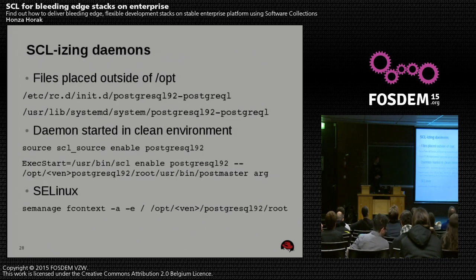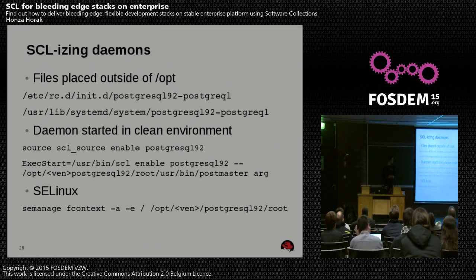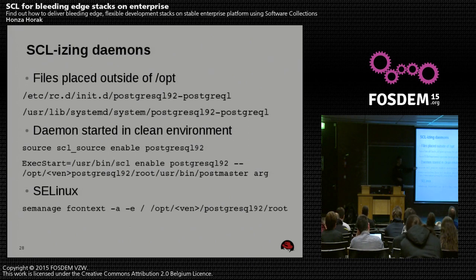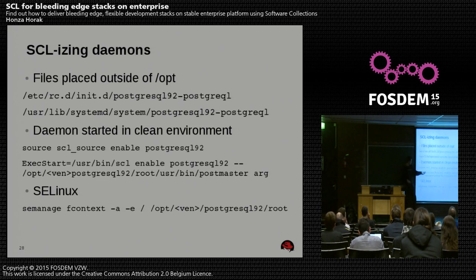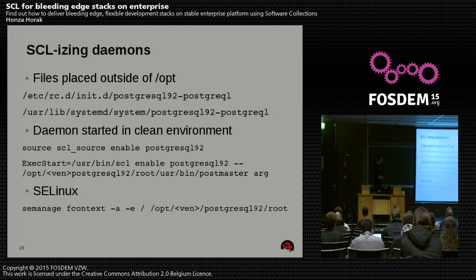What I worked with quite a bit was packaging daemons into software collections, but in the end it turned out to be quite easy. Except for changing the name, I just need to use this one line in the sysv init script, or change the ExecStart variable to use scl and then the binary itself. So even in systemd, the daemon runs in the proper software collection environment with the proper environment variables defined. And it really works — that simple.